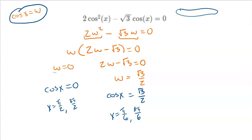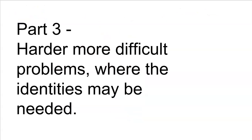Now we're moving into harder problems that require using identities. If you get nervous, remember: take the trig out, let cosine x equal w, see that it's an easy problem to factor, then bring the w back as cosine x and solve the basic trig function. These harder problems are difficult because we're going to have to use identities to handle equations with multiple trig functions.